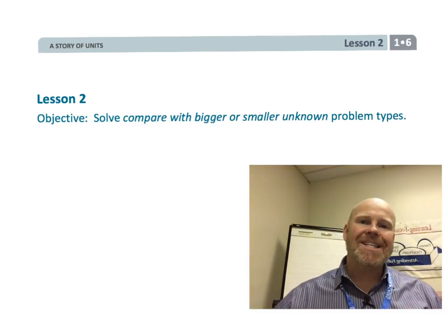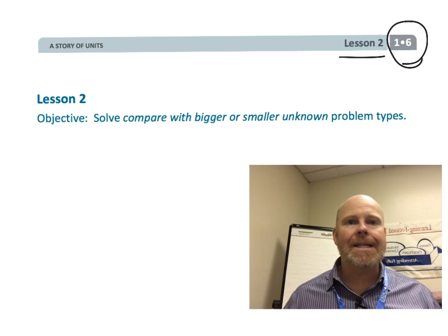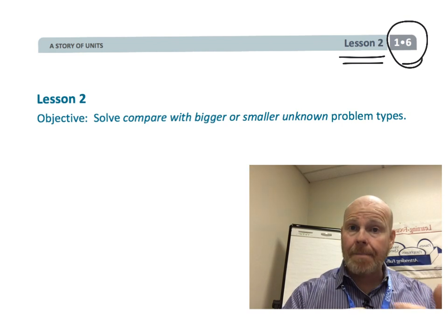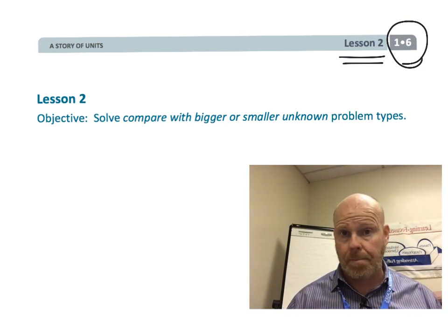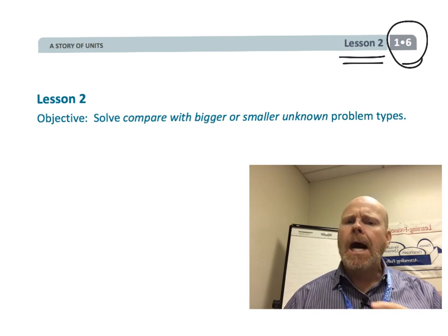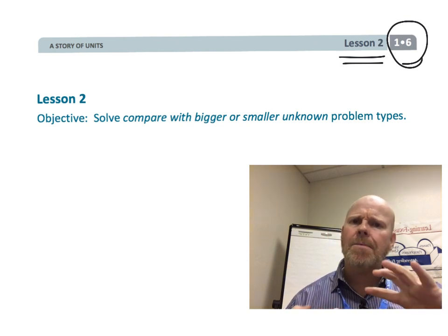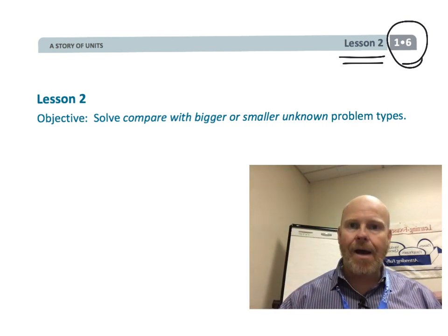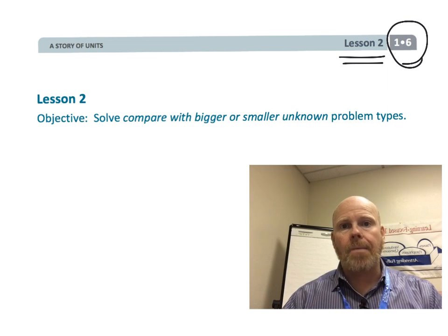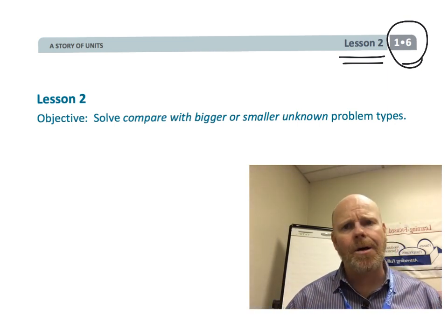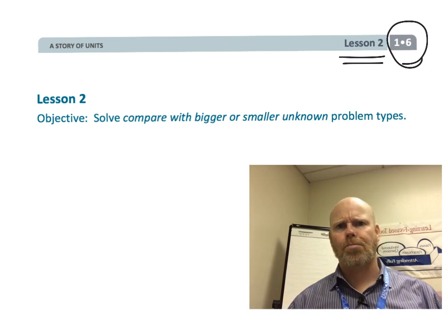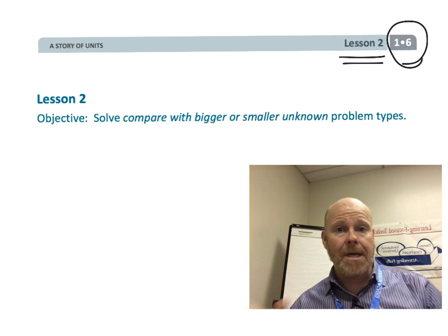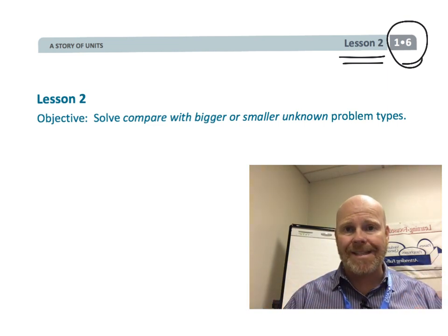This is First Grade, Module 6, Lesson 2. In this lesson, students are going to be doing some modeling with tape diagrams. They're going to be modeling a bunch of word problems, so students are going to be reading a whole lot. Parents and teachers, we're going to be helping our students go through a systematic process for how to read word problems and how to model them using tape diagrams — to help address that old 'students can't do word problems' issue. Specifically, we're going to be focusing on comparing with bigger and smaller unknown problems.